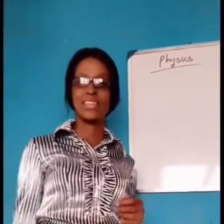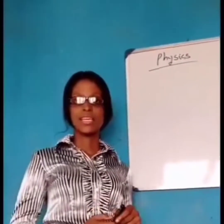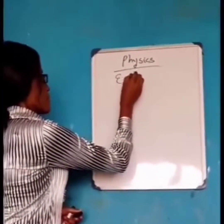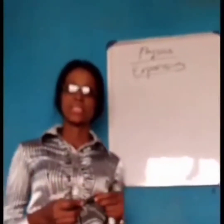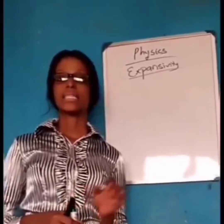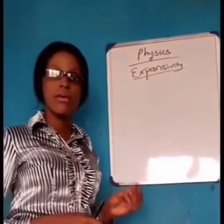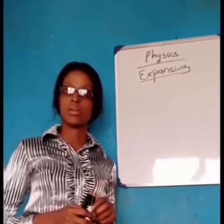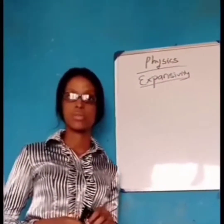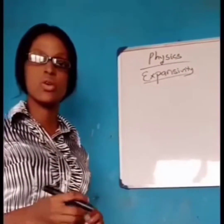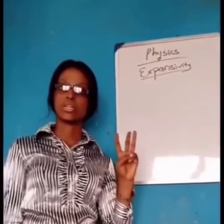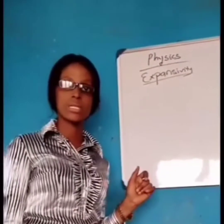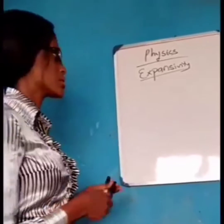Hello friends, my name is Dali Fisnachin. I'm here to take a lesson on the topic of expansivity. Expansivity is defined as an increase in length, area, or volume of a substance when its temperature increases by one Kelvin or degree Celsius. With respect to this definition, expansivity is divided into three types: area expansivity, linear expansivity, and volume or cubic expansivity.